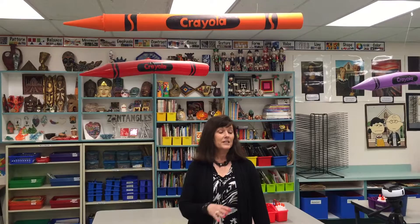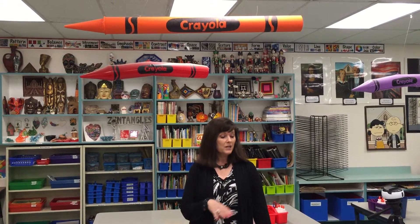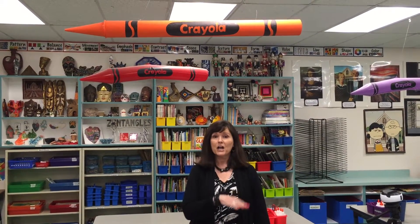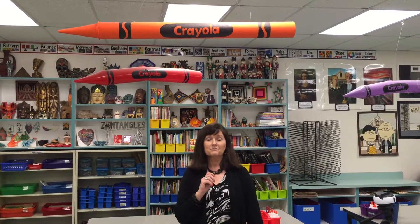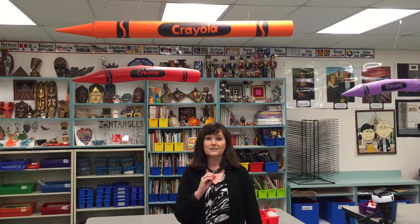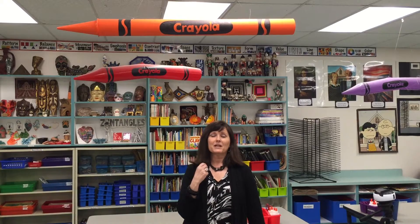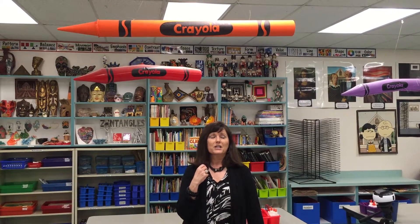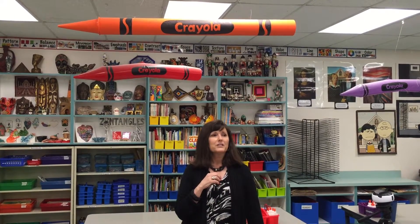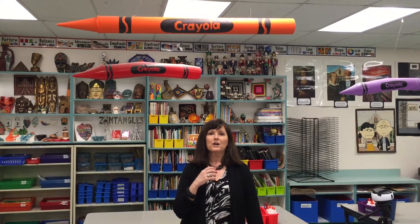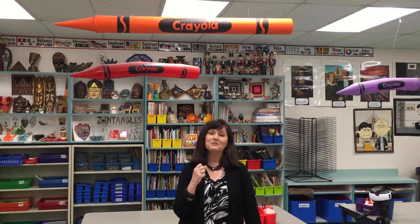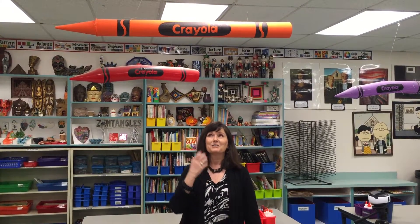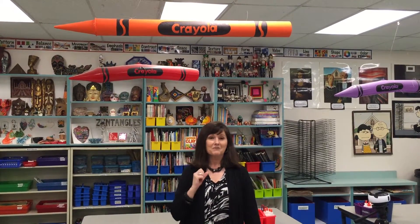I have six student tables in my classroom labeled by color. For many years — decades in fact — I had five of the colors in inflatable crayons. For some reason Crayola doesn't make an orange, so the orange table always felt slighted. Well, on Pinterest I found the directions and it inspired me to make that orange crayon. So here it is — everyone's happy.